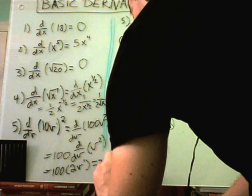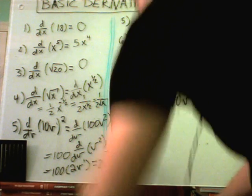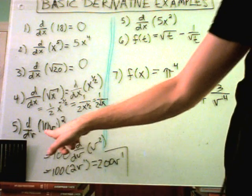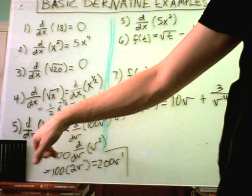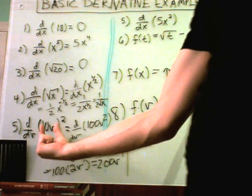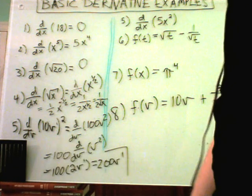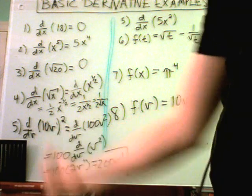If you want to simplify that down a little further you'll get 200v to the first. There's a way that you could do this: you could notice that this is a product. There's also a derivative rule called the product rule, and we'll talk about that very shortly.